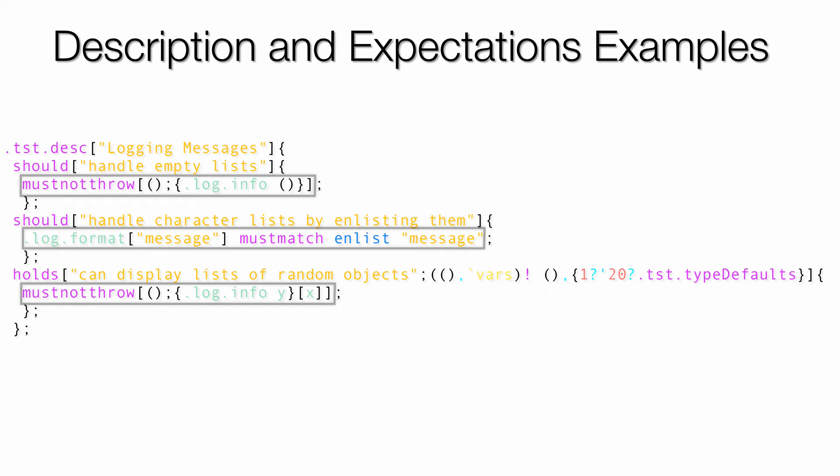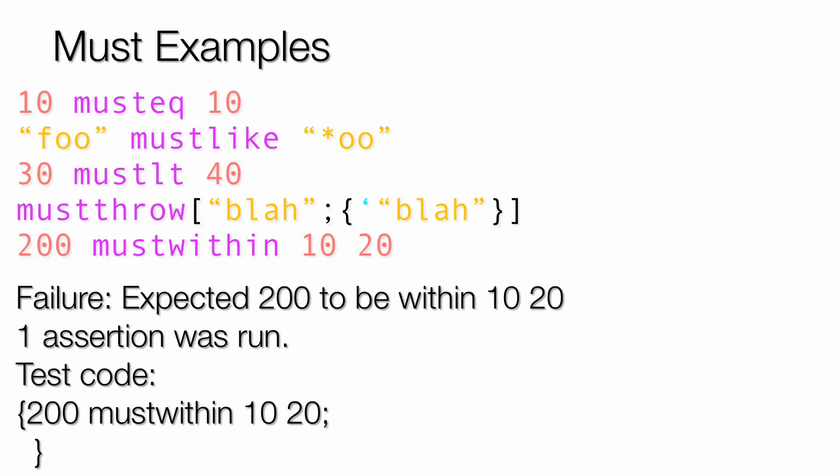Now, let's take a look at a few more of those must statements — the assertions. Anything that produces a Boolean or a Boolean vector can be used, since they are all implemented in terms of one base must function. You might notice that all of these look like they should work, except the last one: 200 most certainly is not within 10 and 20. So, if one of these assertions fails, your test will fail, and you'll see a message telling you about the values that failed.